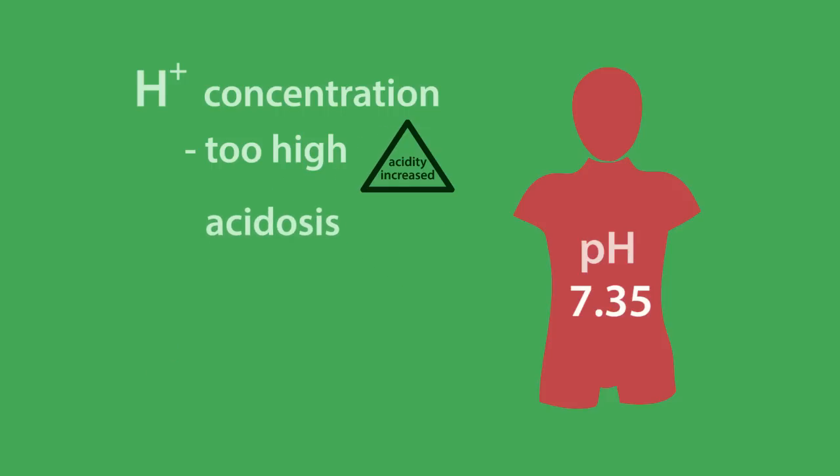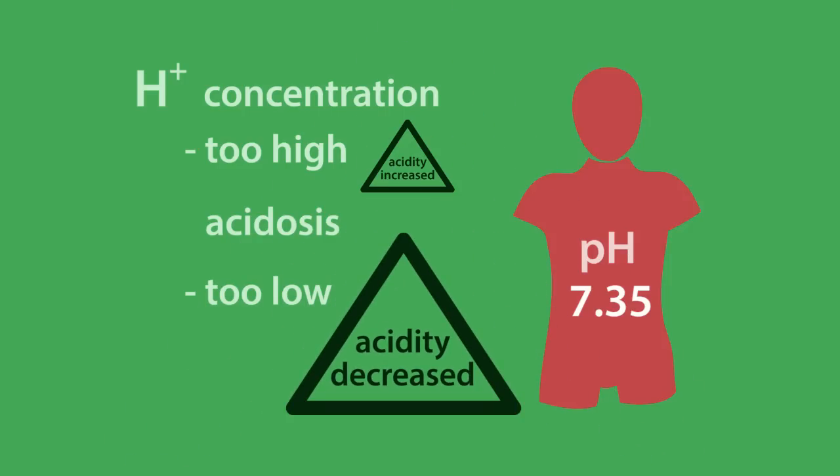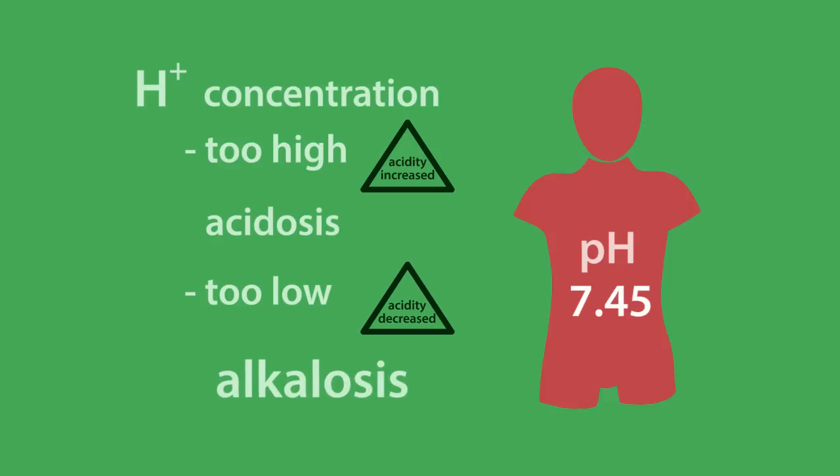If the concentration of protons is too low, it will decrease the acidity of blood. Even at 7.45, then the condition is known as alkalosis.